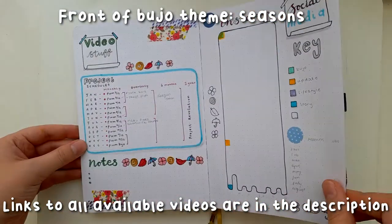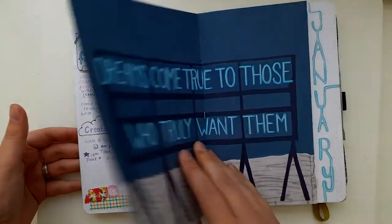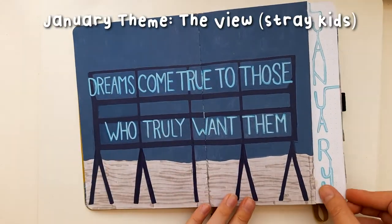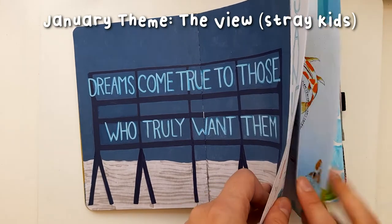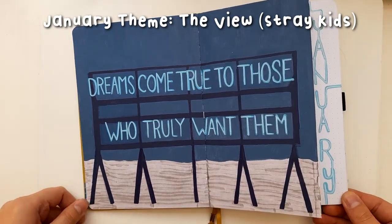So in January I did a Stray Kids The View theme and I love this. This was my first time using the Archer and Olive paint pens, which I did struggle with if you watch the video, but it was still a lot of fun to make and I love how it came out.